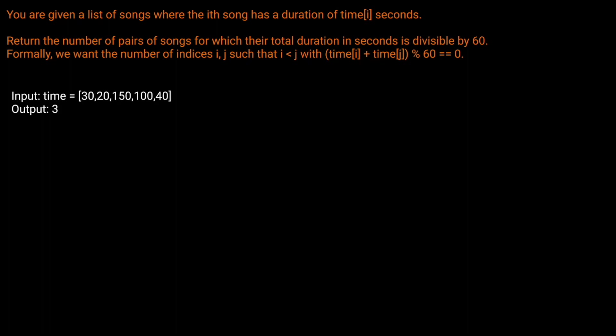That being said, let's read the question prompt. You are given a list of songs where the i-th song has a duration of time[i] seconds. Return the number of pairs of songs for which their total duration in seconds is divisible by 60. Formally, we want the number of indices i and j such that i is less than j, with time[i] plus time[j] modulo 60 equals zero.